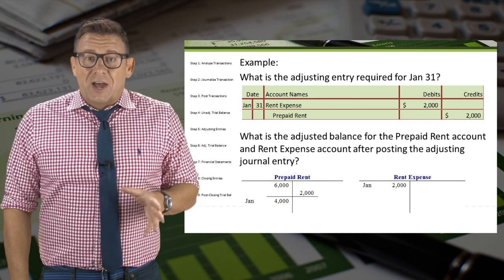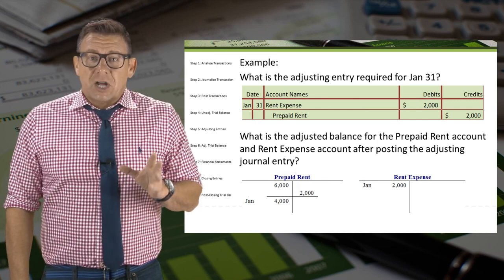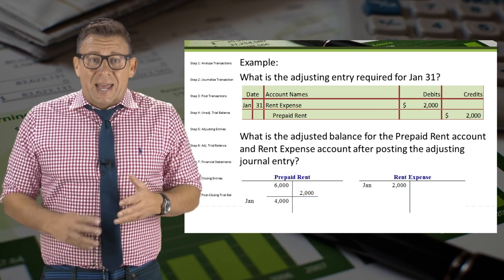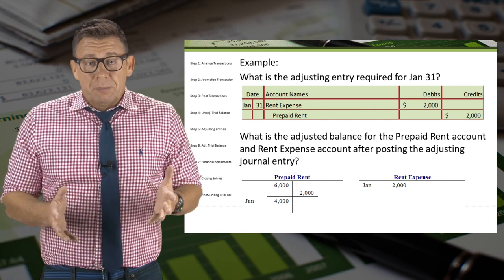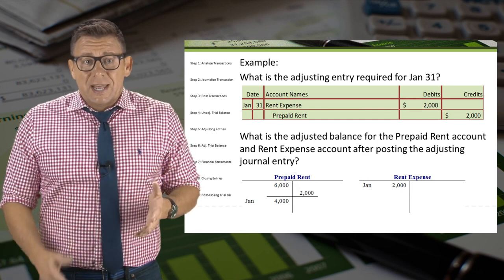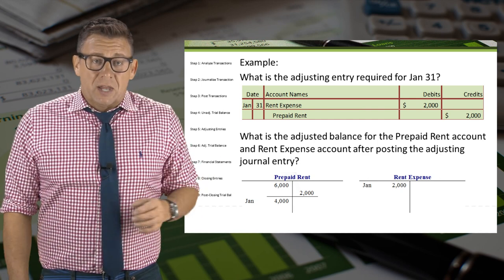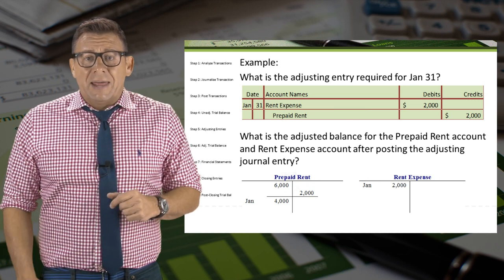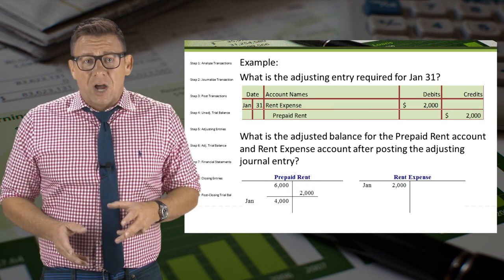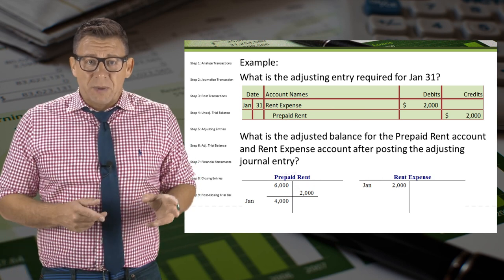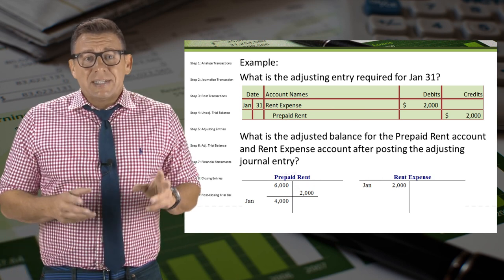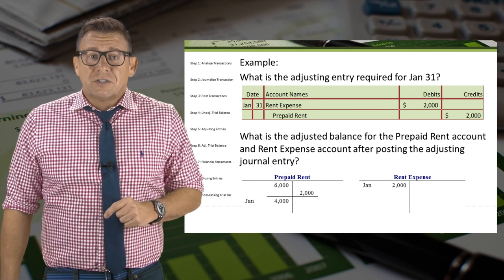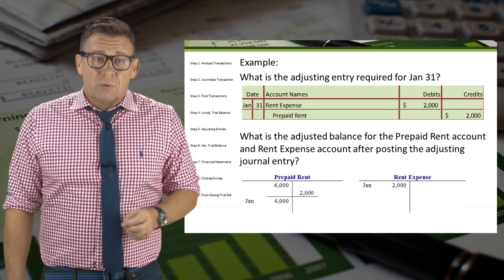Now the account balances are correct. The asset, prepaid rent, has an adjusted balance of $4,000. And the expense account, rent expense, has a balance of $2,000 for January.